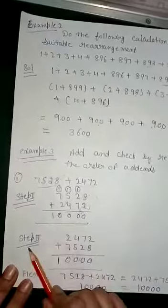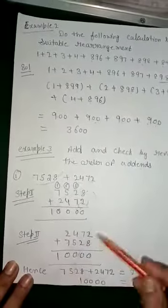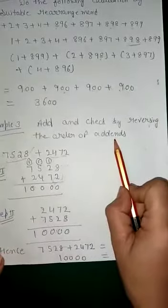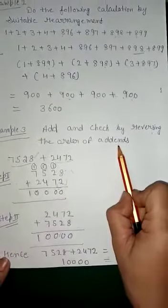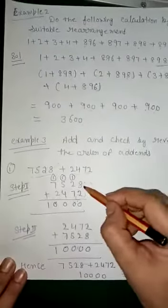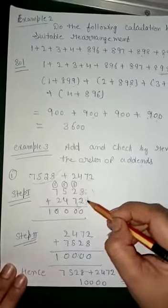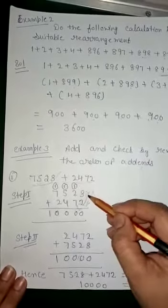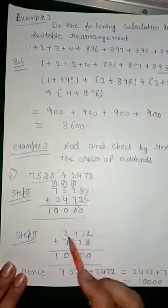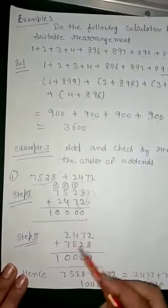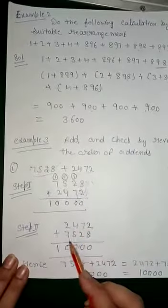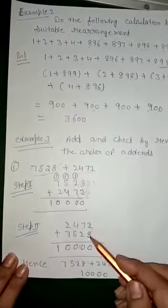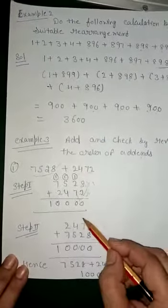Step two: According to the question, we check by reversing the order of addends. The first number goes to the second position and the second number goes to the first position — this is the reverse order. Now we add: 2 + 8 = 10, write 0 carry 1.